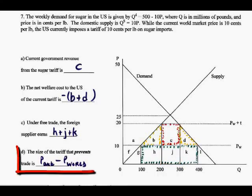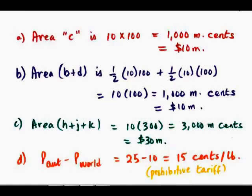The size of the tariff that prevents trade, this is another important question. The tariff that prevents trade is the tariff that causes trade to go to zero. At a price of 25, domestic demand is equal to domestic supply. So if we impose a tariff of 15, it would drive away all foreign trade. And that would be the size of what is called the tariff that prevents trade. So the answer to part D is 15.